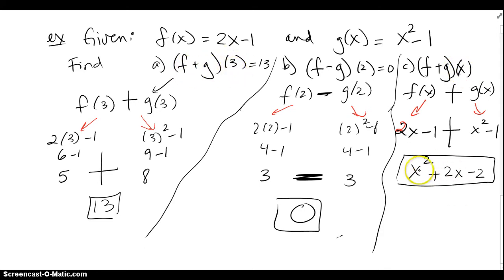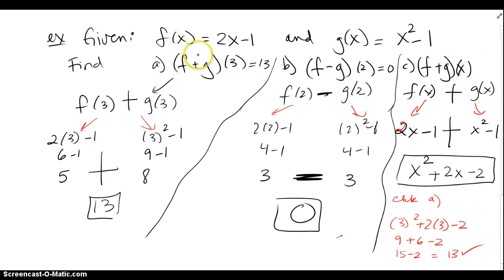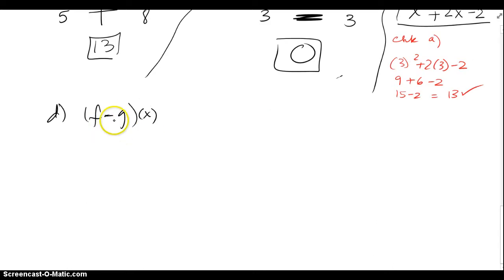This is the global function that takes care of all x values, whereas the earlier parts gave outputs for specific numbers. I can verify part a using this global function: plug in 3 to get 3 squared plus 2 times 3 minus 2, which is 9 plus 6 minus 2, equaling 13. It checks out. This is the global sum for all x's; part a was just the sum for x equals 3.